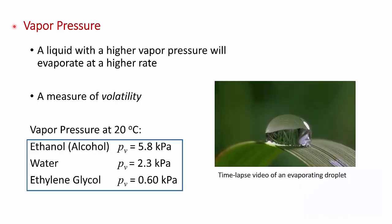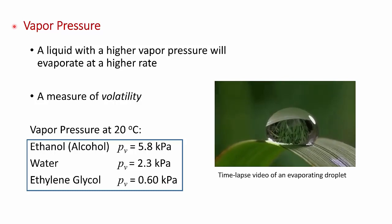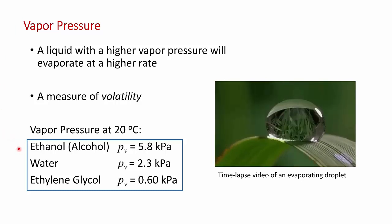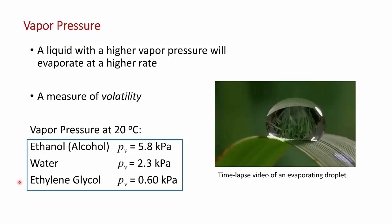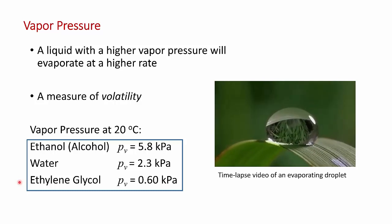For the same reasons I just discussed, vapor pressure is also a direct measure of the volatility of a liquid. The higher a liquid's vapor pressure, the faster it will evaporate. If you look at these three vapor pressures for ethanol, water and ethylene glycol at 20 degrees C, you should find that these fit with your intuition. Alcohol evaporates more quickly than water and water evaporates more quickly than glycol. That's another consequence of the fluid property vapor pressure.